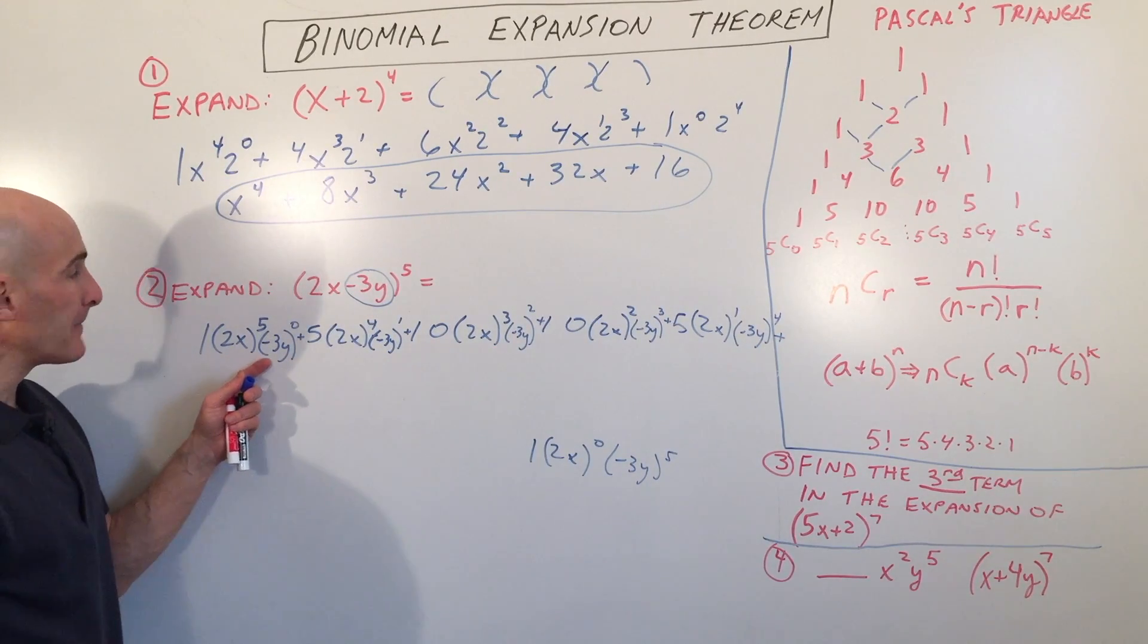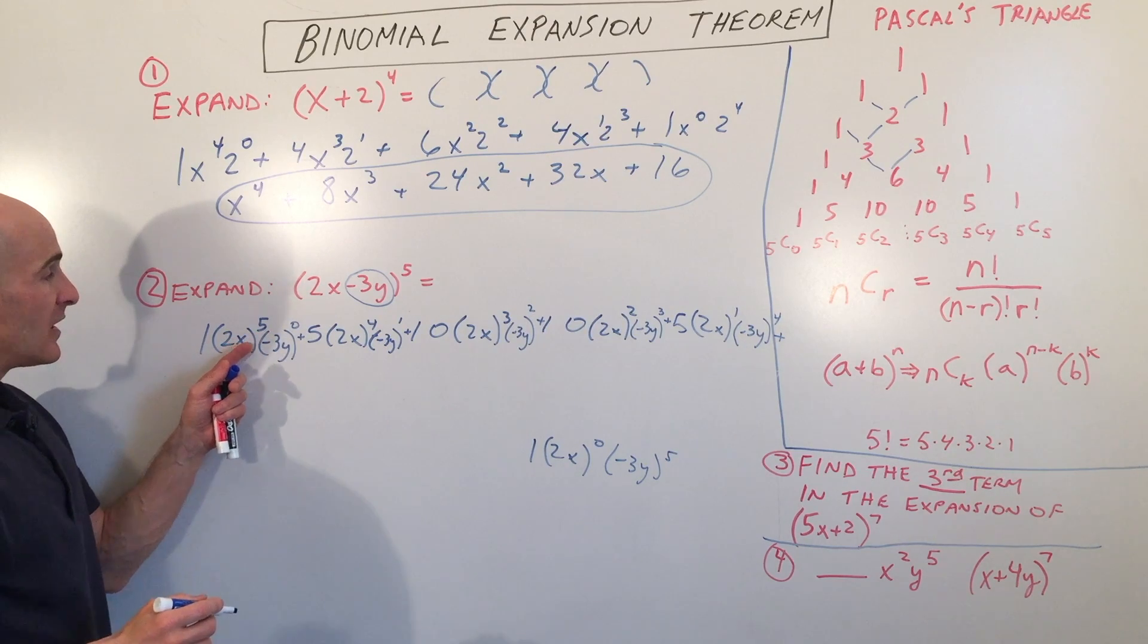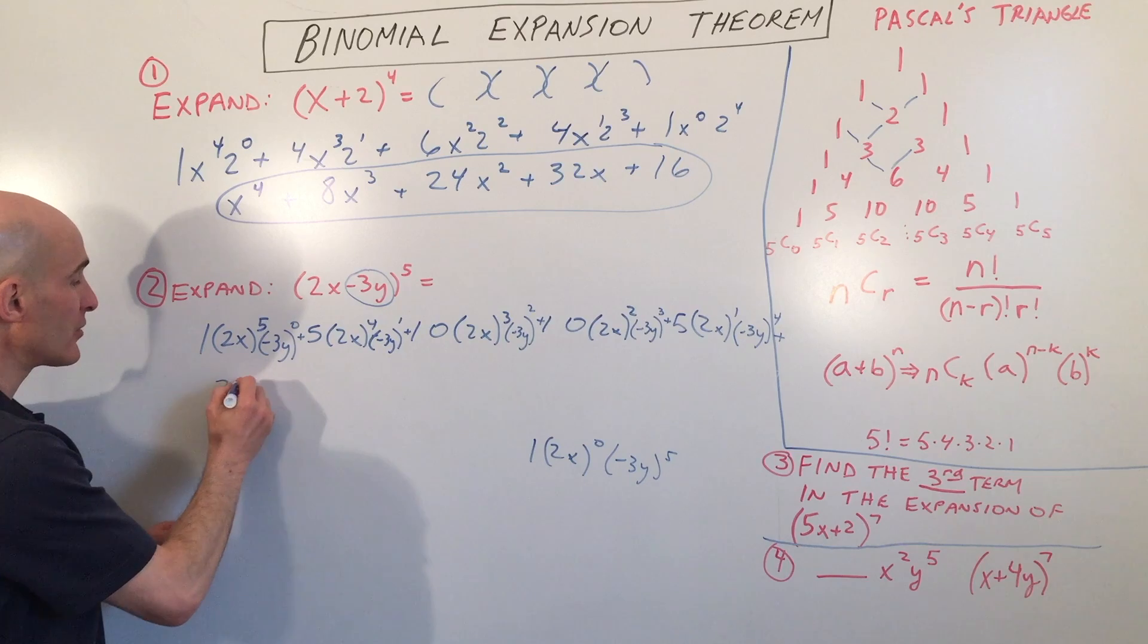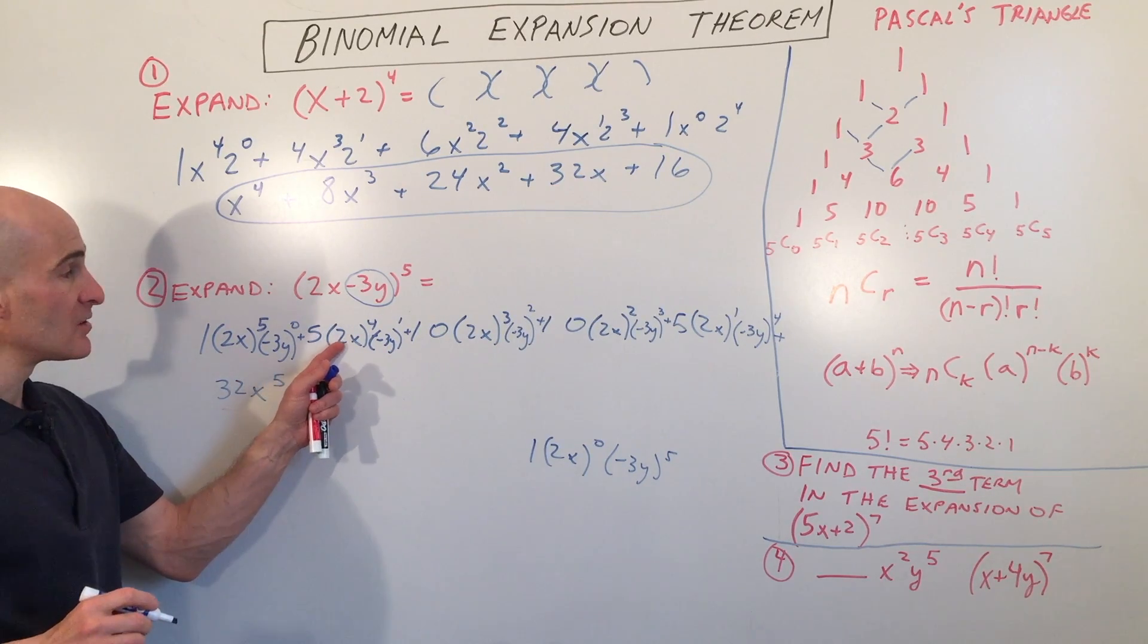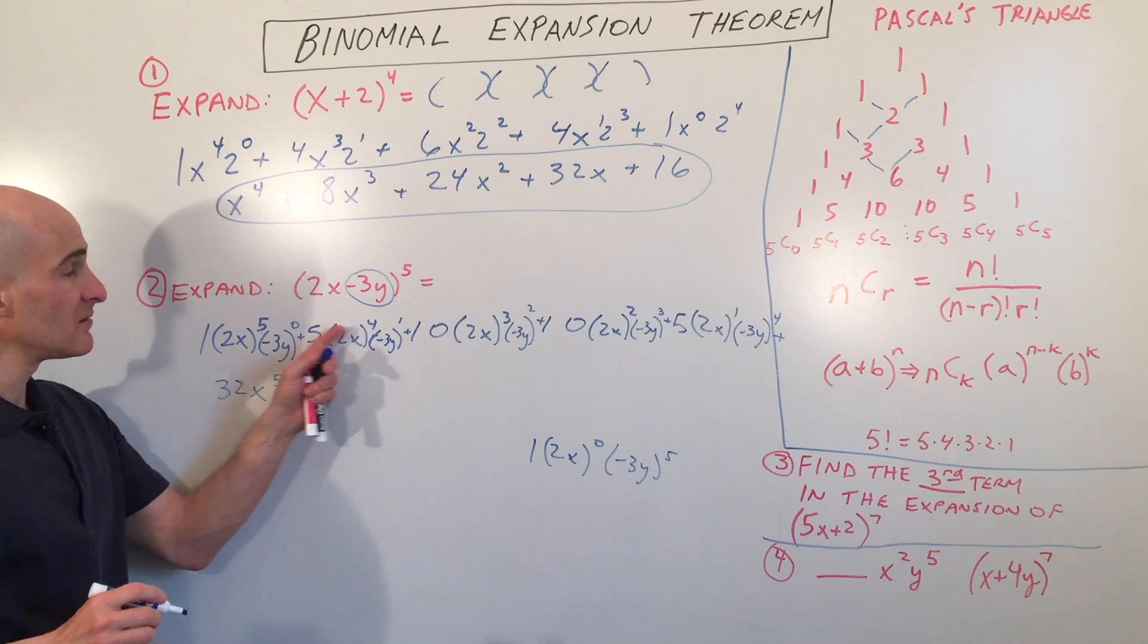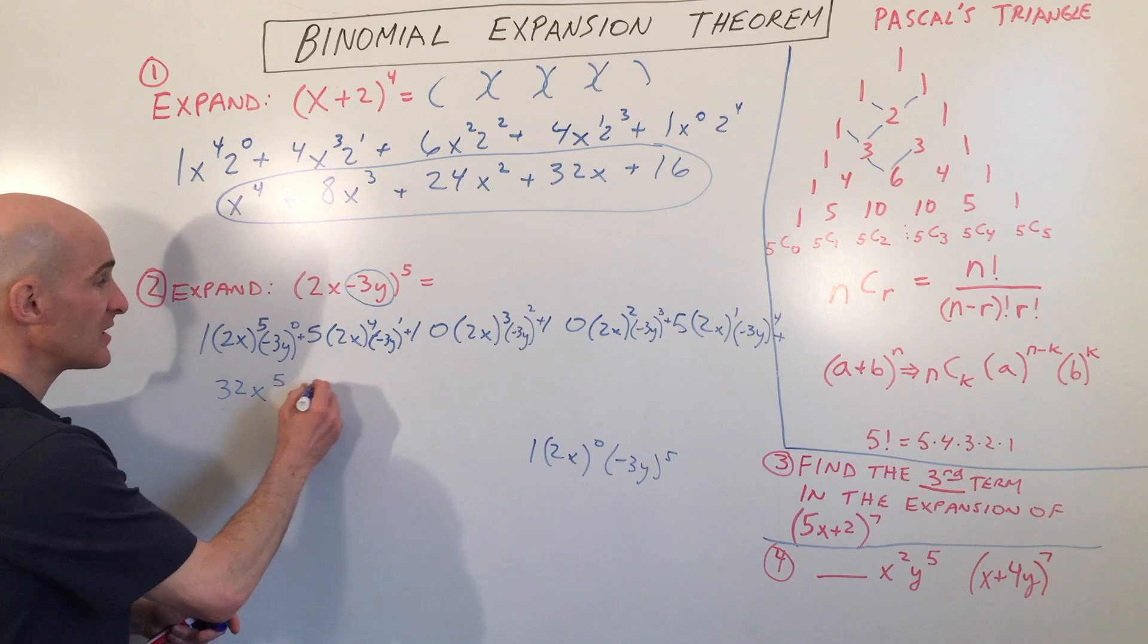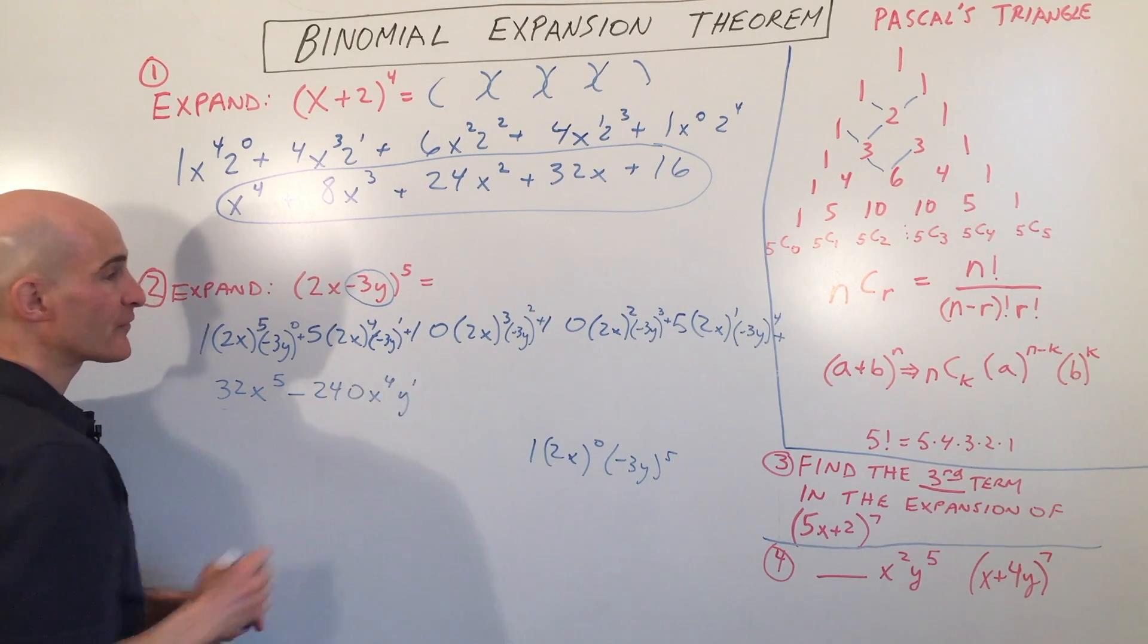Now we're going to go back and we're going to simplify. So 2 to the fifth is 32. Anything to zero power is 1. So this first term is going to give us 32x to the fifth. The next term is 2 to the fourth, which is 16, times 5 is 80, times negative 3 is negative 240, x to the fourth, y to the first.